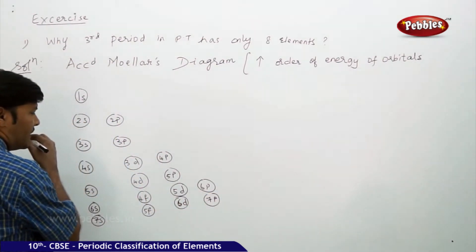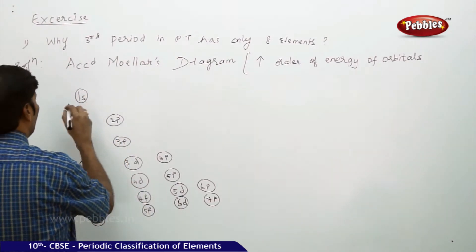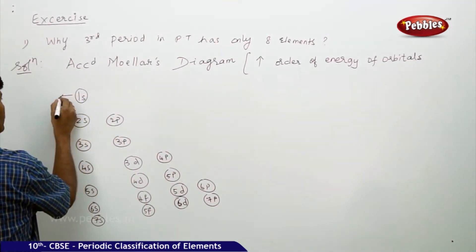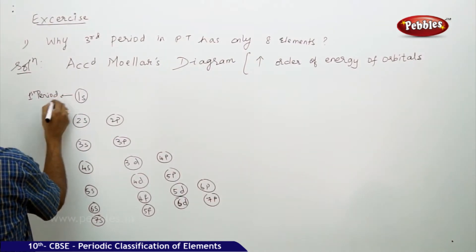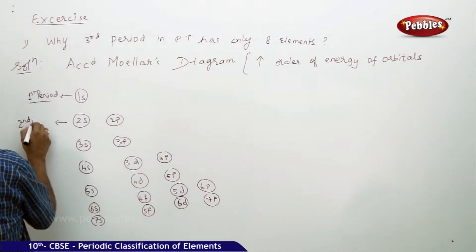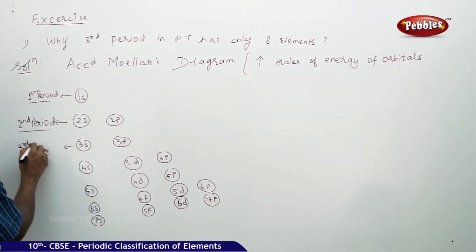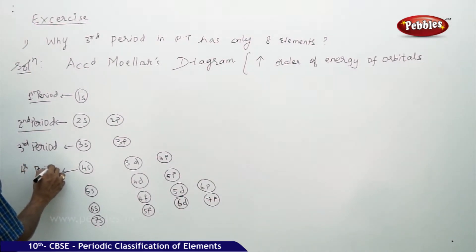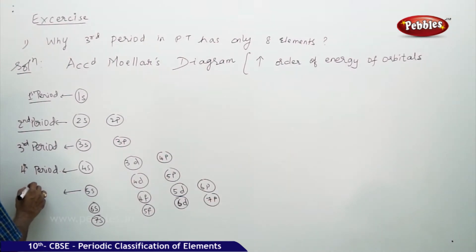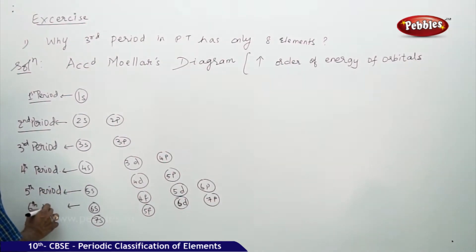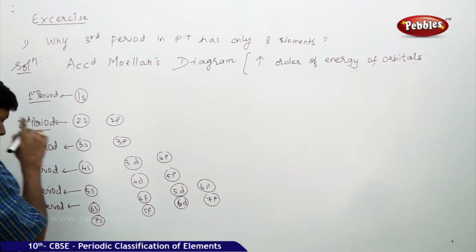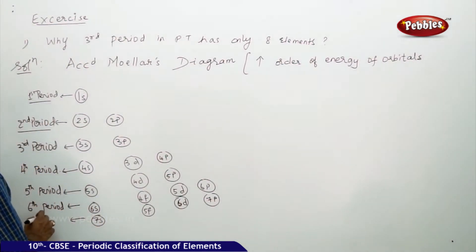What you're noticing here is that this corresponds to the first period, this corresponds to the second period, this corresponds to the third period, this corresponds to the fourth period, and this corresponds to the fifth period. The sixth period corresponds to four orbitals, and then the seventh period.